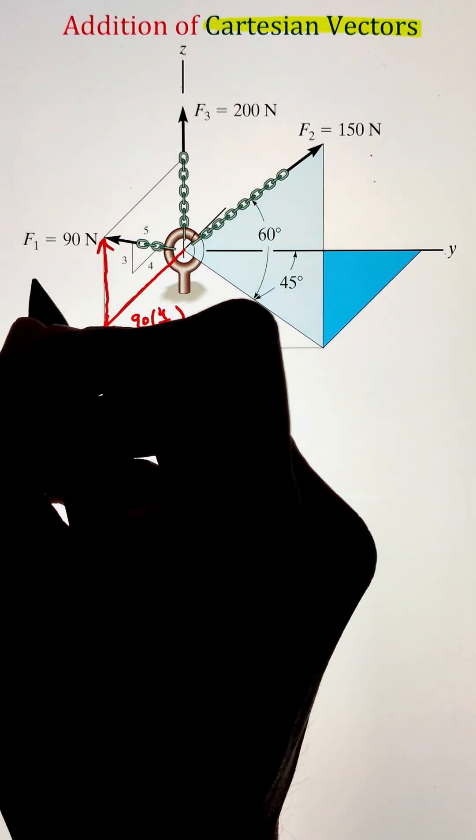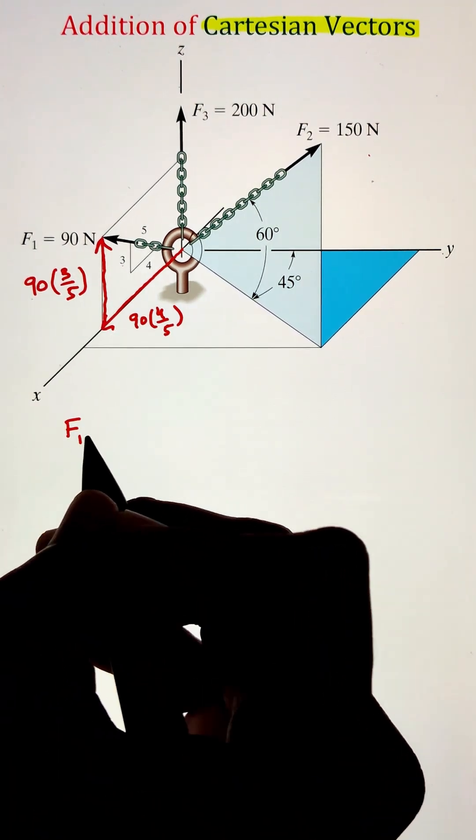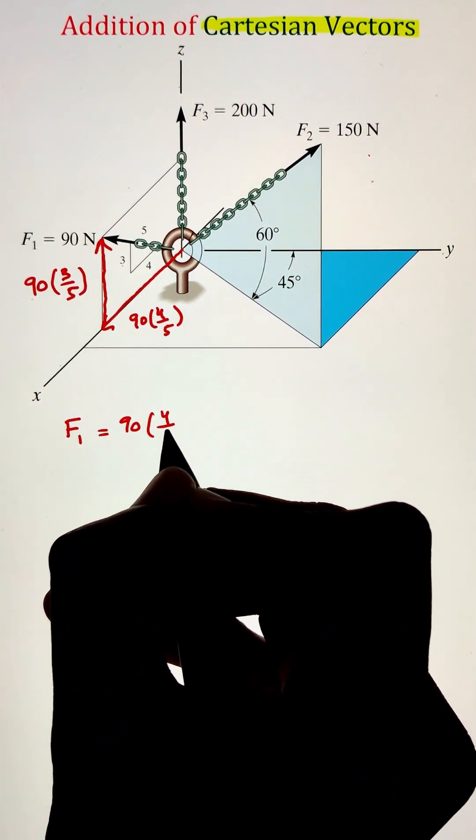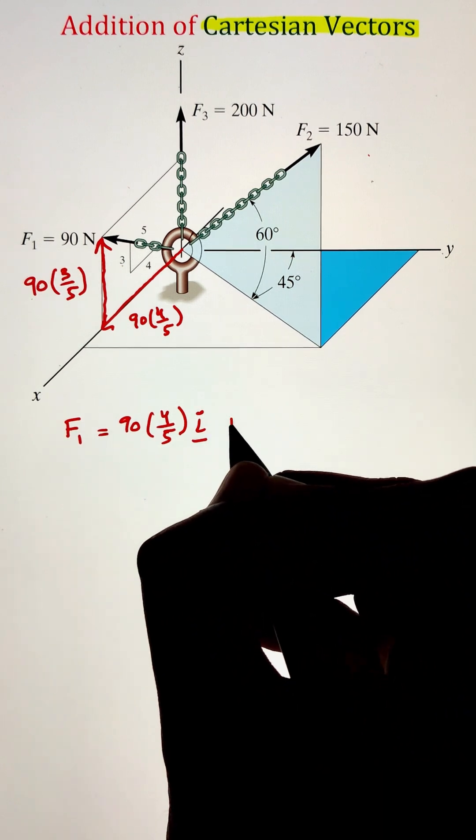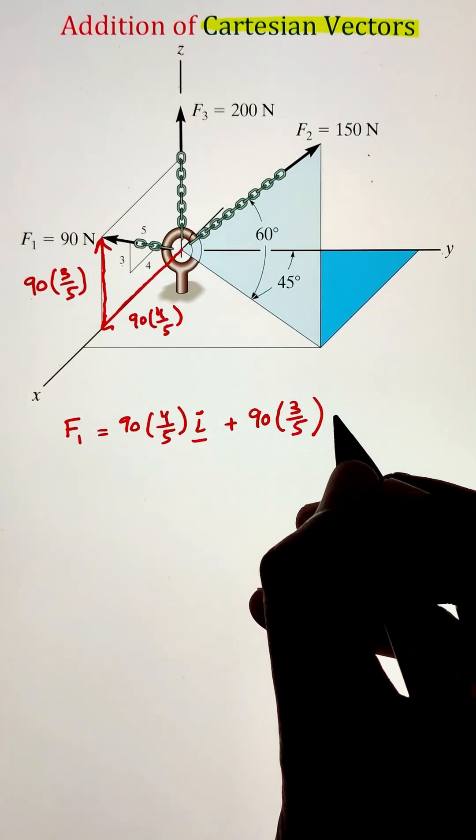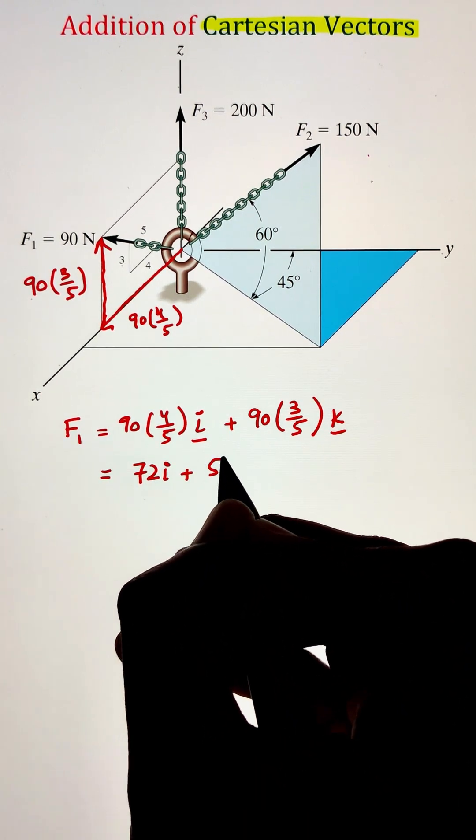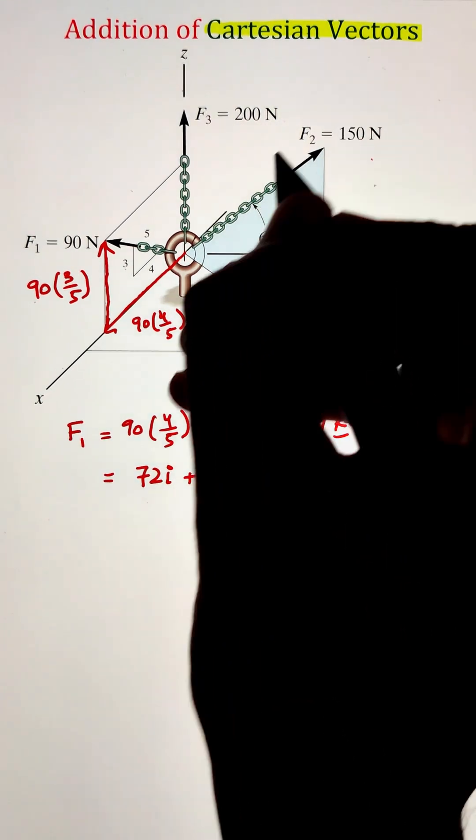So to start, I have a force F1. It is on our X and Z plane. So the X component can be calculated by multiplying 90 with 4 over 5, whereas the Z component is calculated by multiplying the force 90 with 3 over 5. Here, the I and K are representing the unit vector along the X and Z direction.